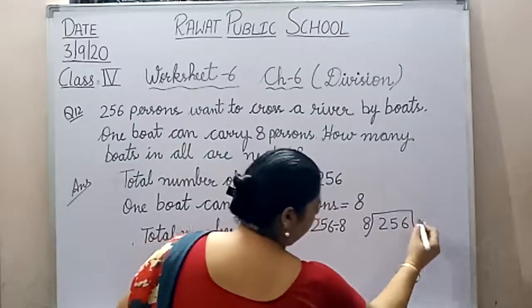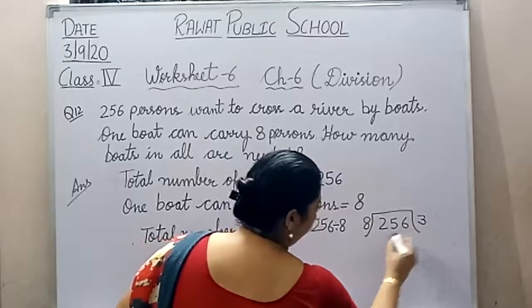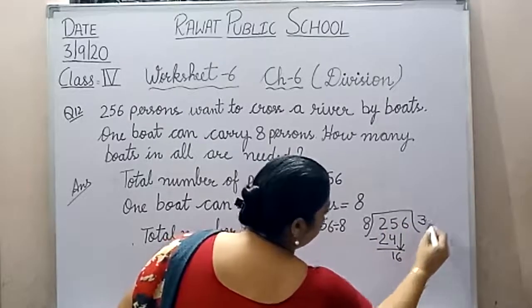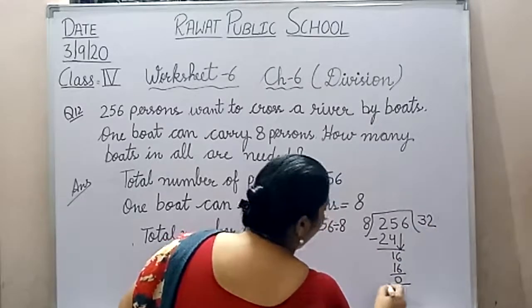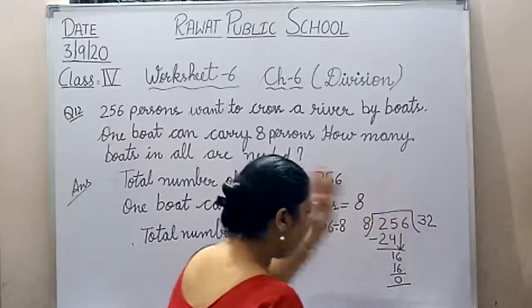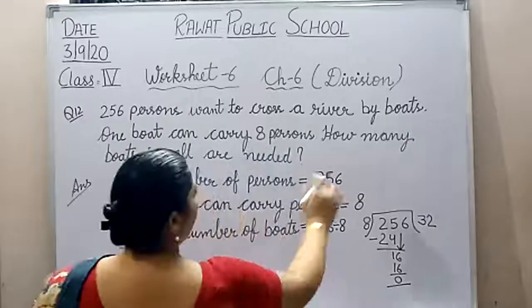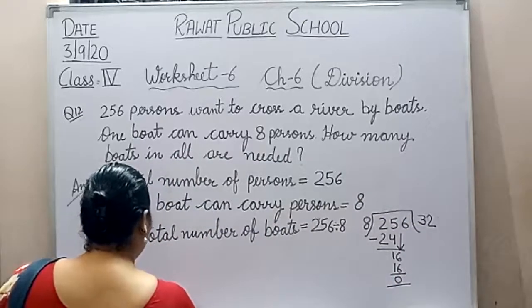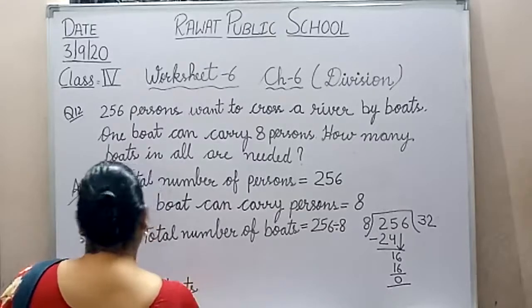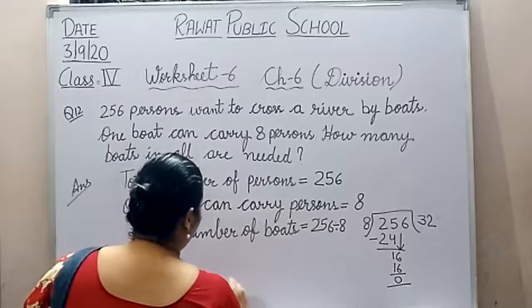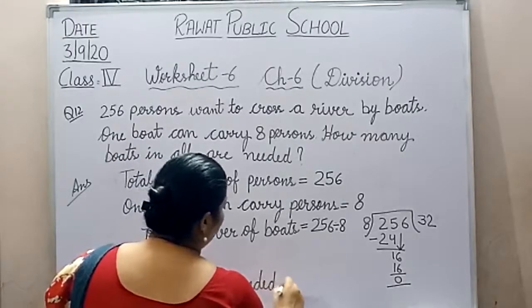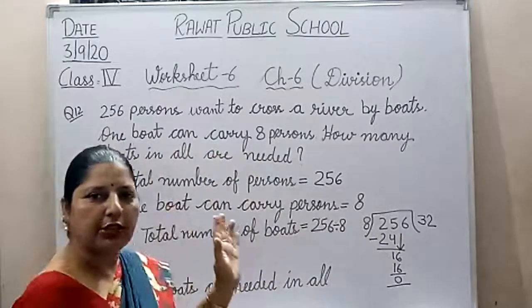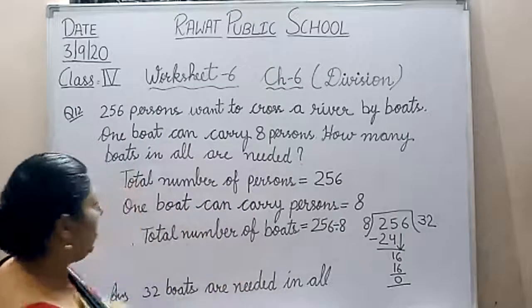256 divided by 8. We need 32 boats. 32 boats will carry all 256 persons. Write down question number 12 students.